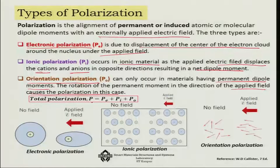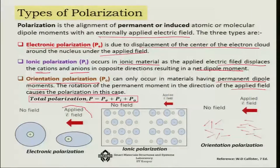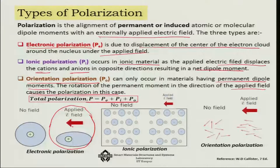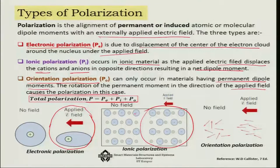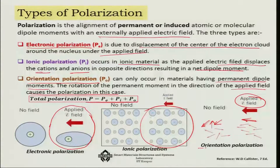The total polarization P is expressed as the summation of electronic polarization, ionic polarization, and orientation polarization. As shown in the figure: under no field, the system is neutral; as the electric field is applied, the electron cloud reshapes (electronic polarization); in ionic systems, ions reorient themselves (ionic polarization); and for orientation polarization, randomly aligned permanent dipoles approximately align themselves in the direction of the applied field.